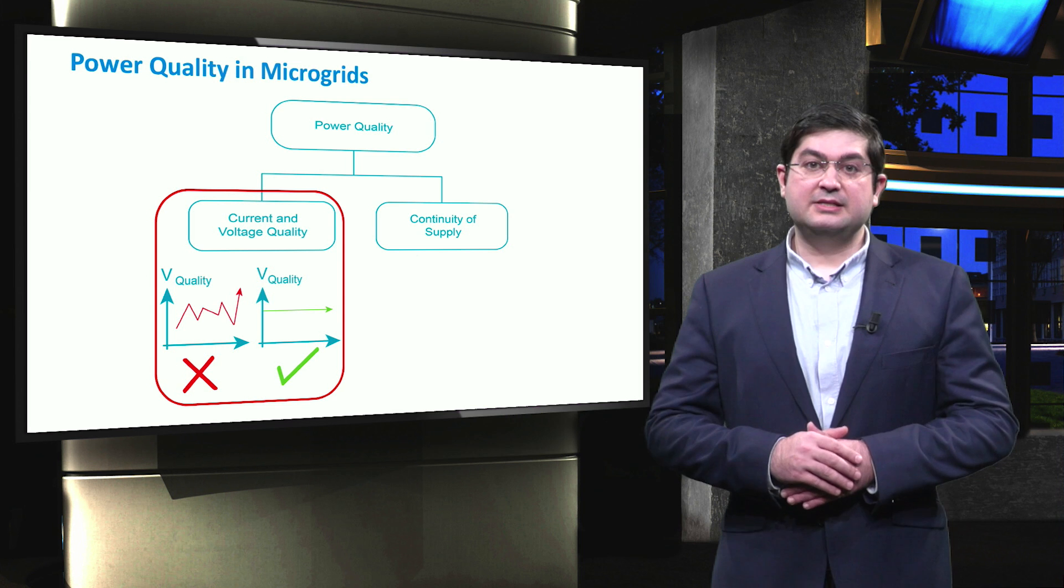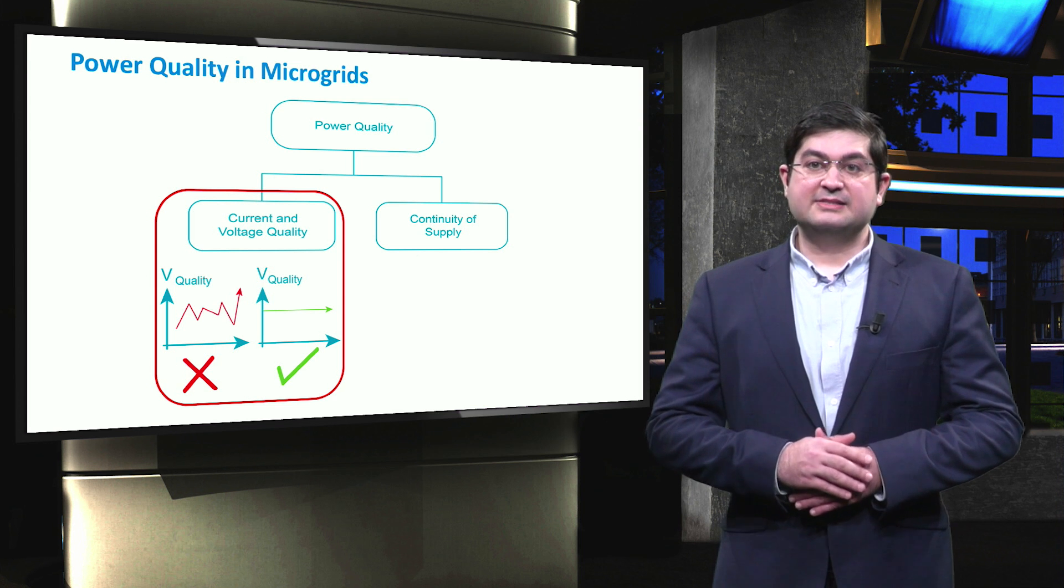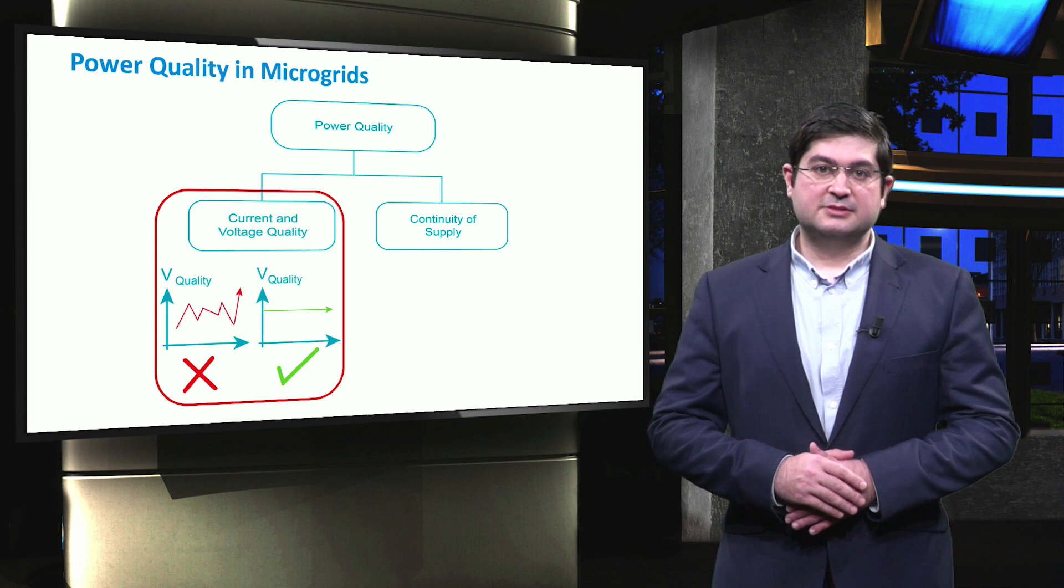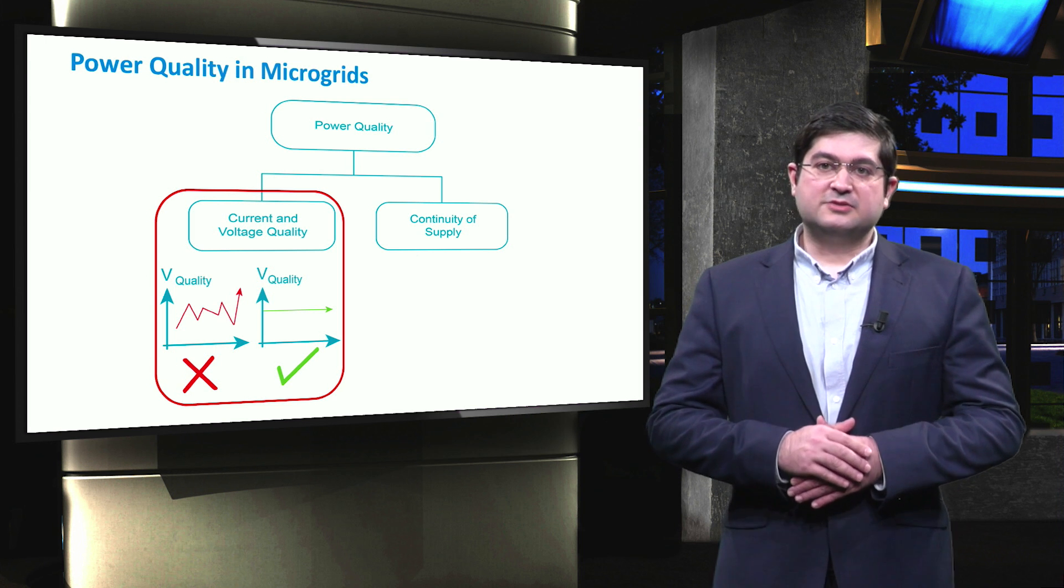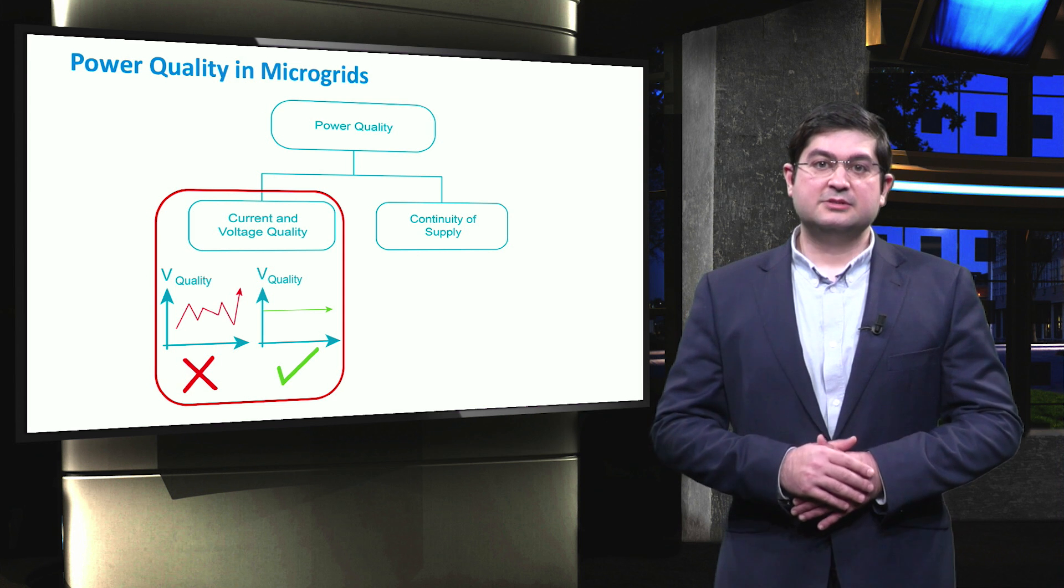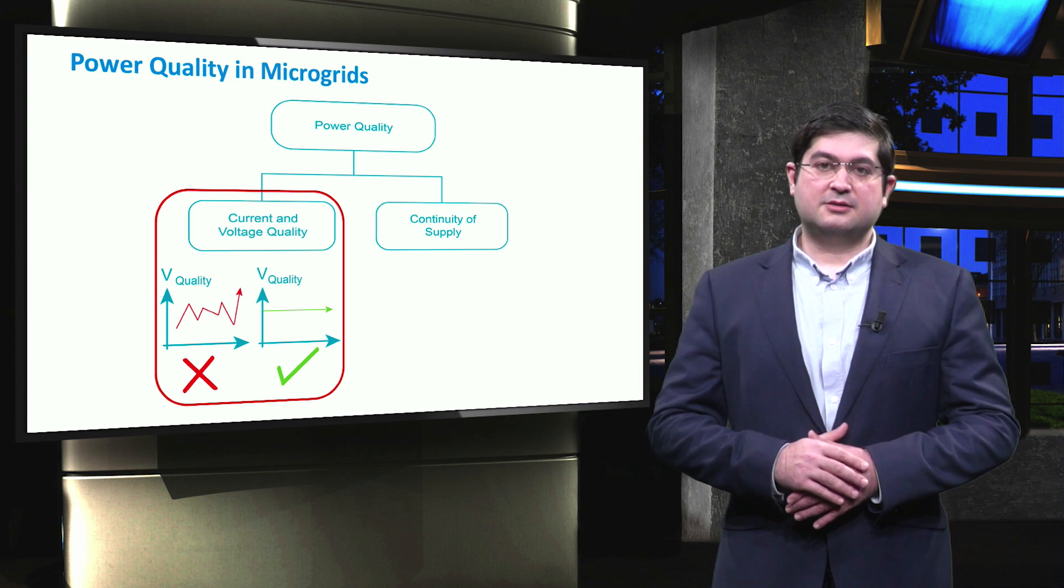And the second part is the continuity of supply, which is defined as the absence of power supply to the end-use consumers. Continuity of supply is currently one of the most relevant topics about the distribution networks to which microgrids are typically connected.